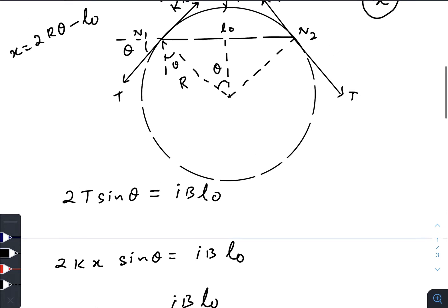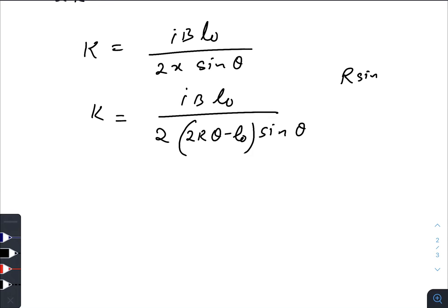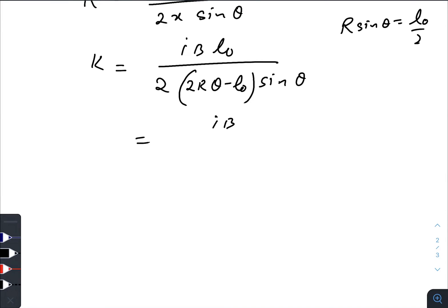Let us check again this diagram. If we consider this triangle we can write that R sin θ is equal to this length that is l₀ by 2. So R sin θ equals l₀ divided by 2, so we can modify this equation.